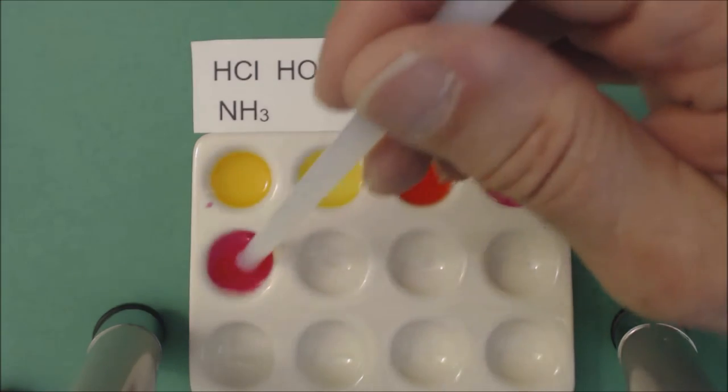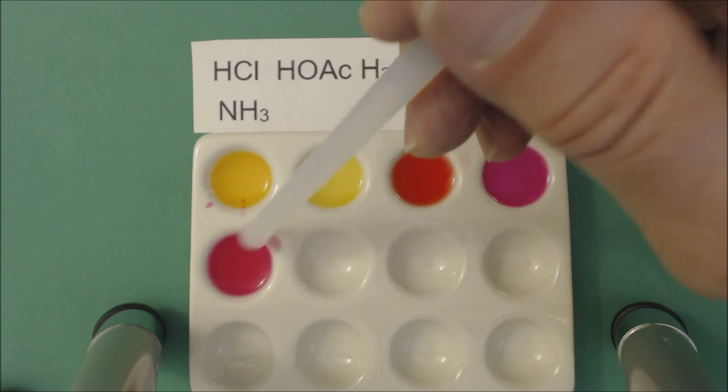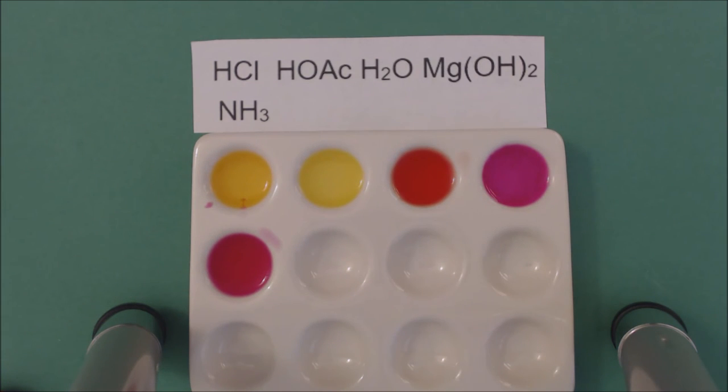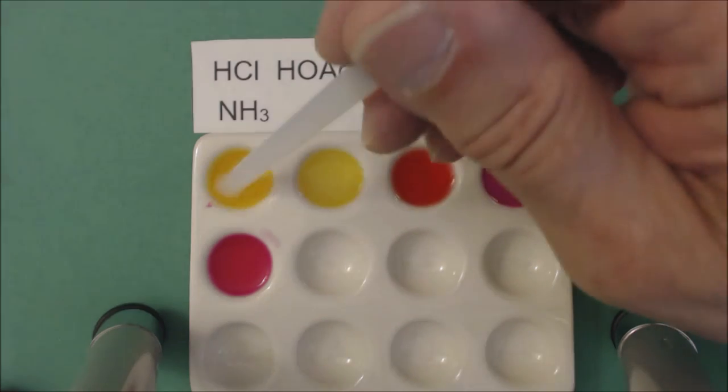Although the milk of magnesia, because it has that milky color, looks a little different than the ammonia, they're both in the pink range. Let me just mix this up a little better.